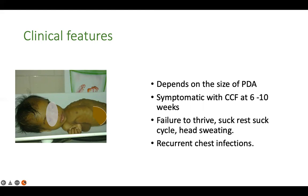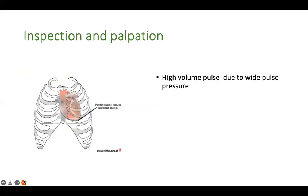They manifest at 6 to 10 weeks because this is when pulmonary pressures come down and the shunt increases. The usual manifestation is features of CCF, like a suck-rest-suck cycle — the baby finds it difficult to continuously suck, akin to exertional breathlessness in an older child. There may also be head sweating while sucking, failure to thrive, and recurrent respiratory infections.